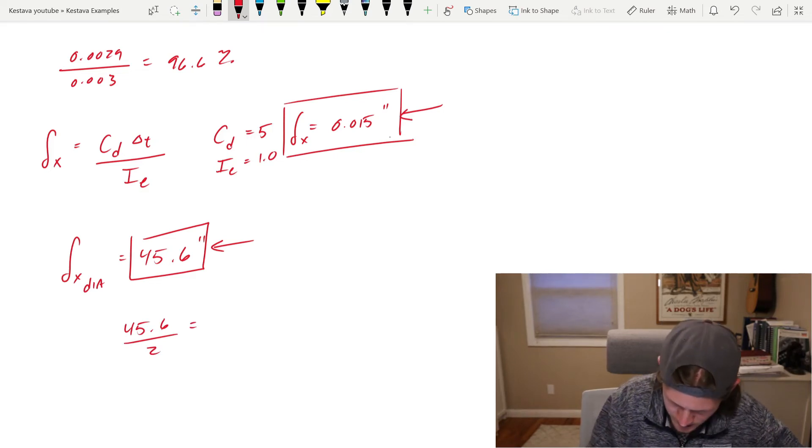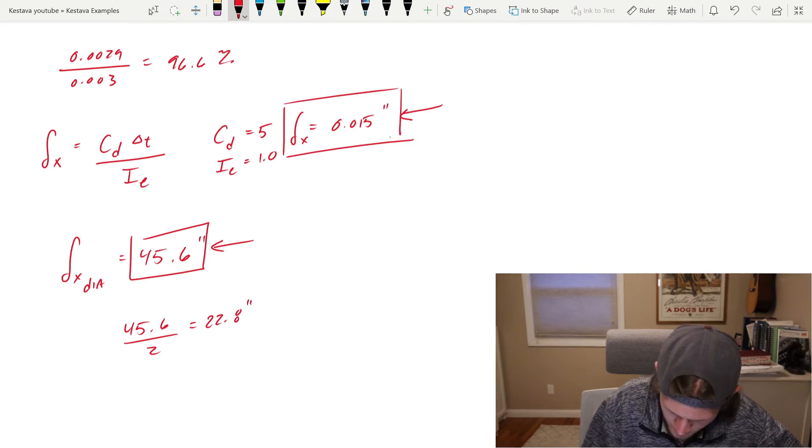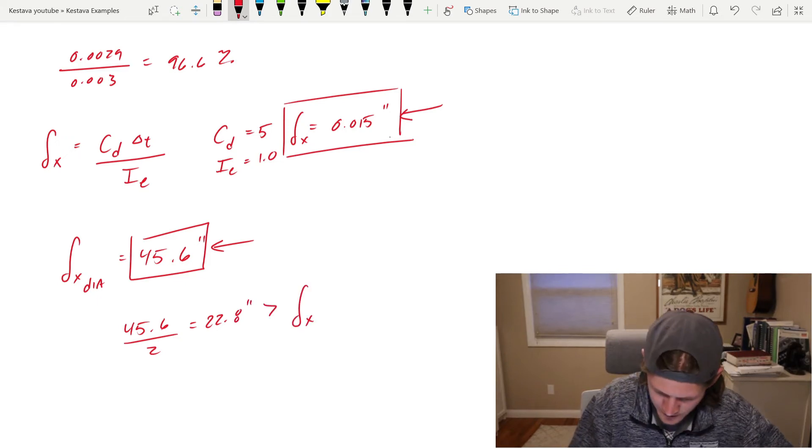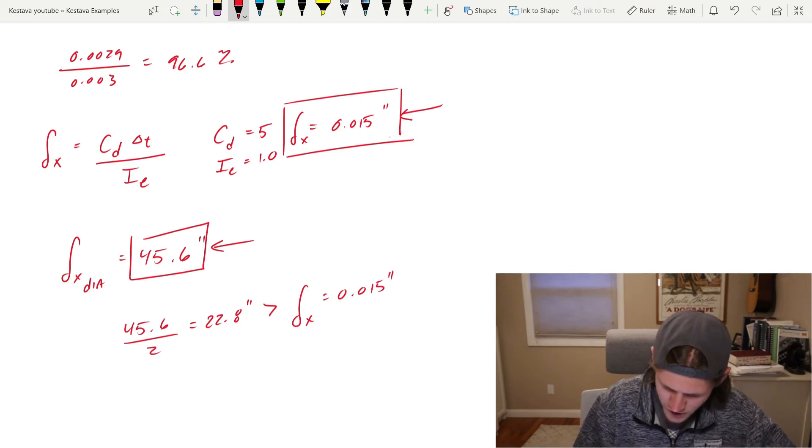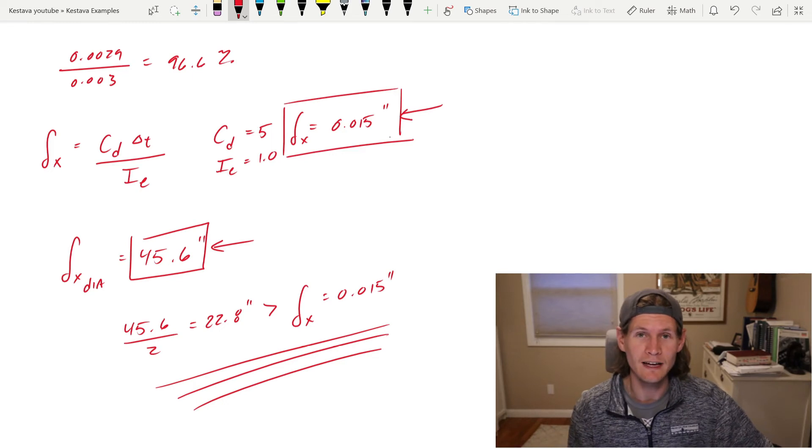And very clearly, if we just do 45.6 over 2, that's 22.8 inches, which is greater than your average drift of 0.015 inches. So it is very, very clearly a flexible diaphragm.